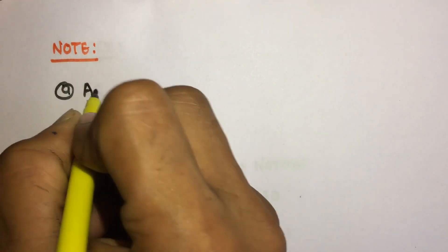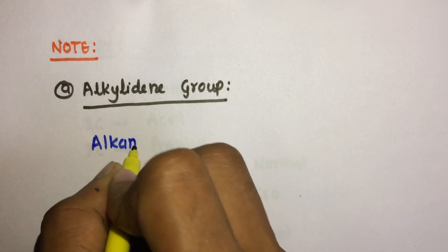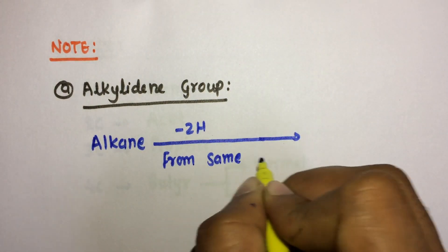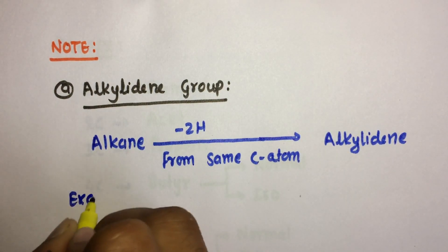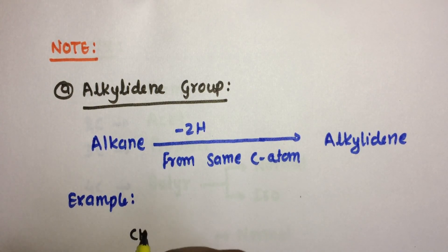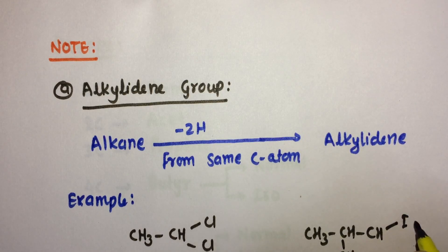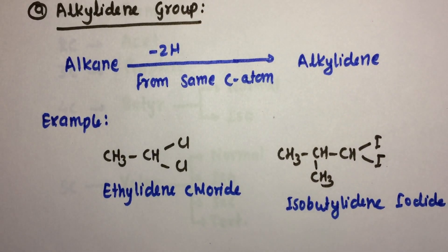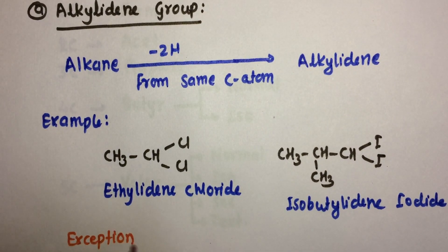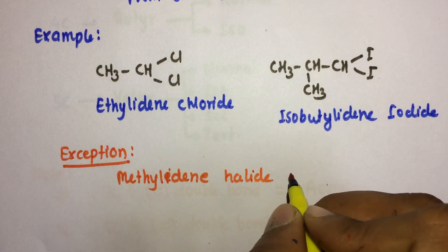There are two other groups to discuss. The first is the alkylidene group: if the second valency is free from the same carbon, it is written as alkylidene. The alkane loses two hydrogens from the same carbon atom to form alkylidene. For example, ethylidene chloride or isobutylidene iodide. Note: 'methylidine halide' is the wrong name; the correct one is 'methylidene halide'.